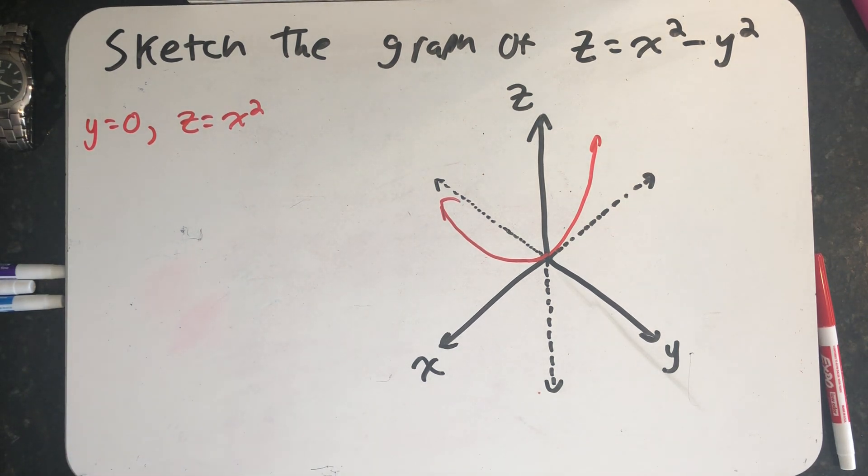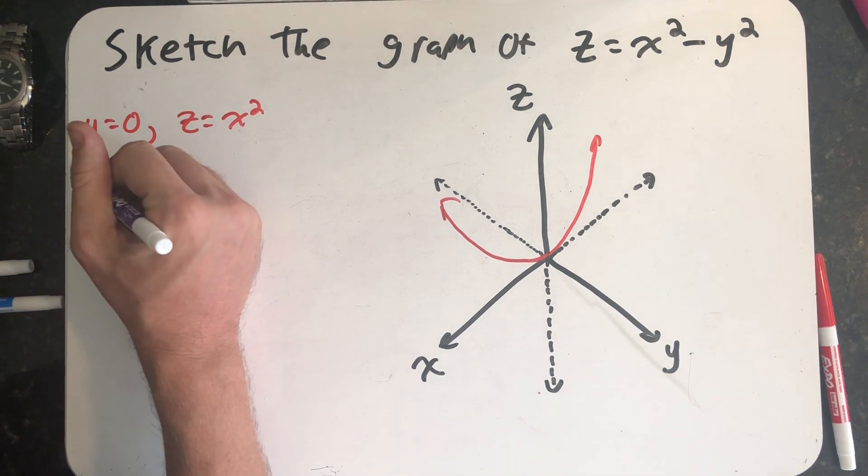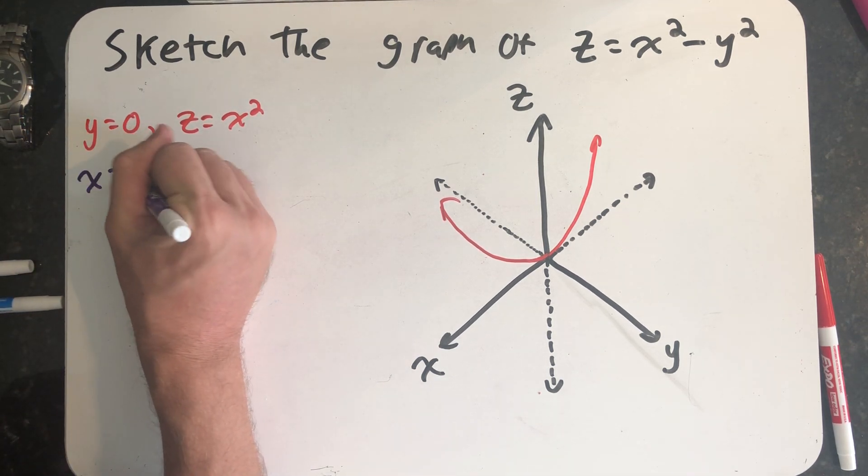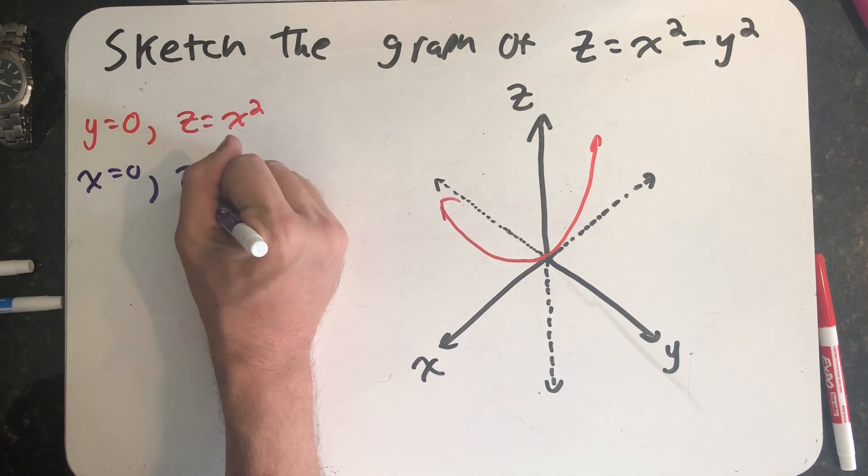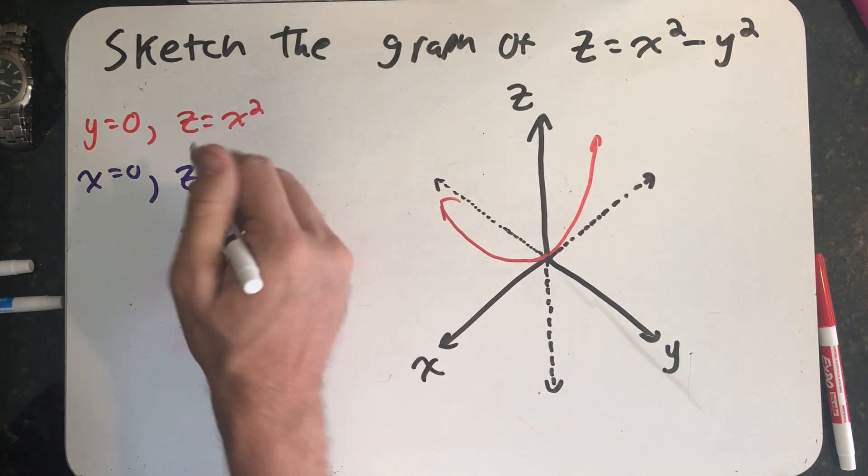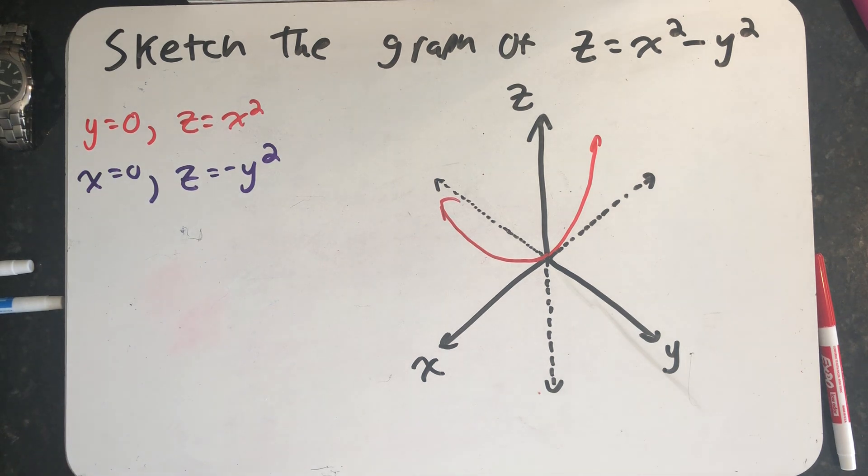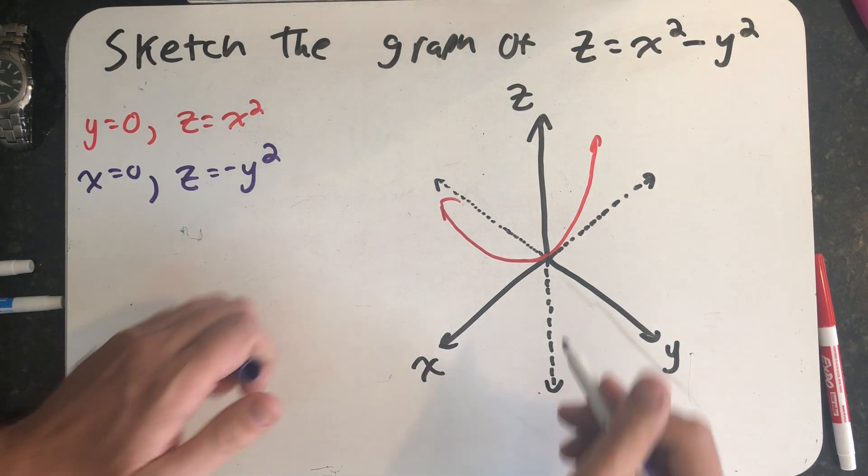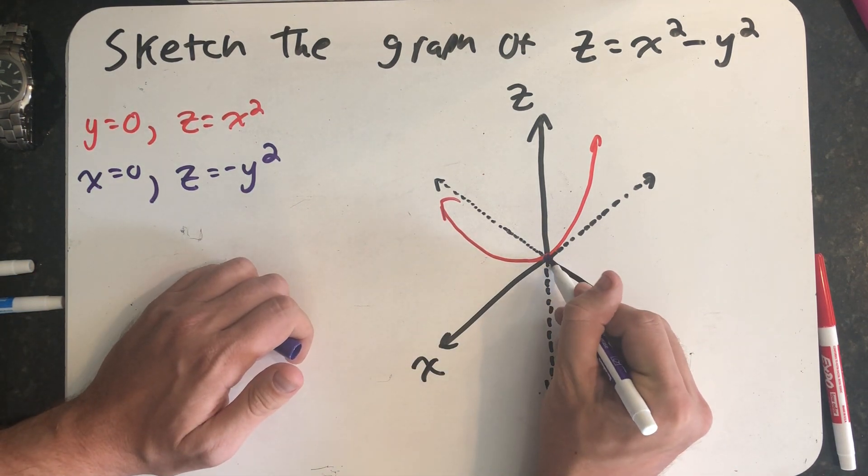The next slice I want to consider is what's going on in the yz plane, or where x is equal to zero. Our equation when x is equal to zero is just minus y squared. That's another parabola. It's just that this one is in the yz plane and faces downward, still passing through the origin.